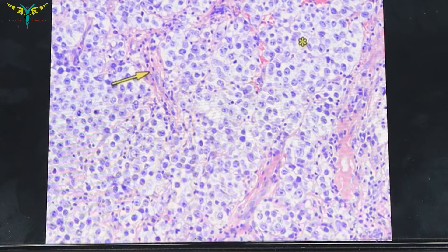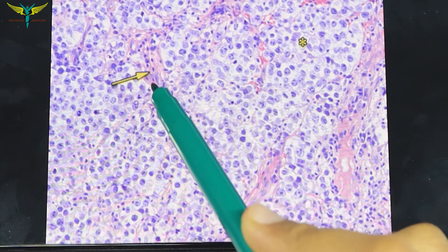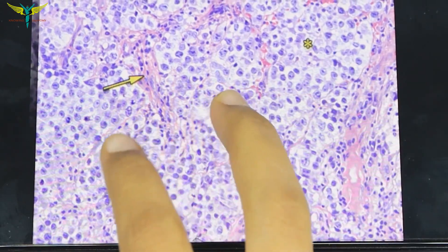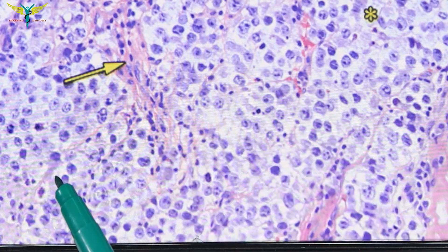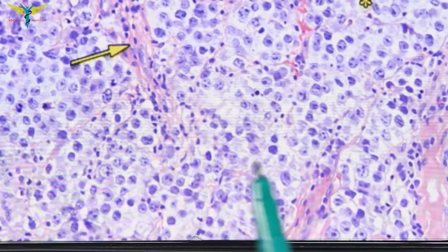This is the real microscopic image of the seminoma. You can note these are the fibrous septas formed by the fibrous tissues, and here these are the testicular cells which are formed in clusters divided by these septas.